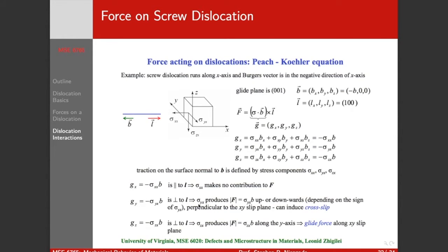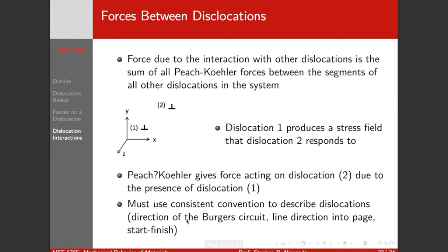Only when G is acting perpendicular to the line length do we get force. So now forces between dislocations. We can also use the Peach-Koehler equation to describe the effect that one dislocation has on the other. The force due to the interactions with other dislocations is basically the sum of the Peach-Koehler forces of all the other dislocations in the system. Here we have two edge dislocations. Dislocation one produces a stress field, there's an elastic field around this dislocation. Dislocation two is going to respond to that stress field, in the same way that dislocation one is going to respond to the stress field caused by dislocation two.